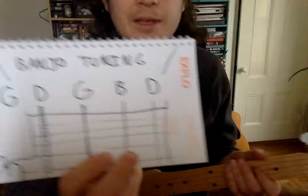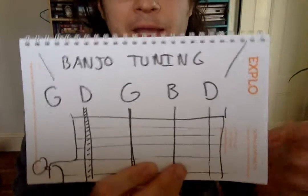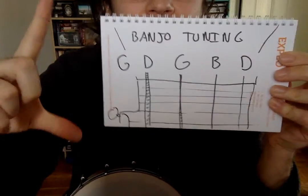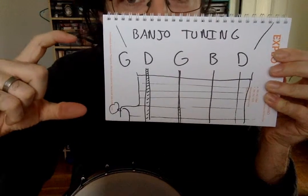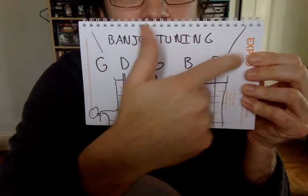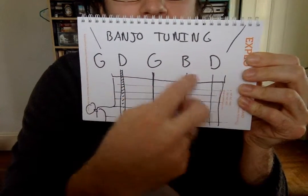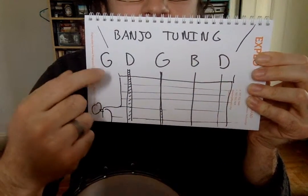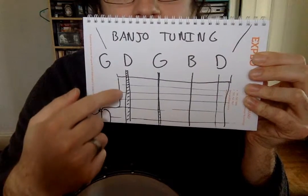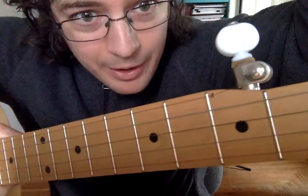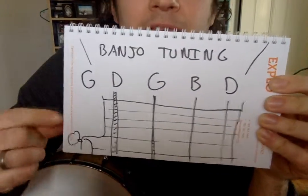So this is a diagram of banjo tuning. If you imagine this is a kind of very short banjo neck — this up here is the head, this is the nut, and then down here is the neck where it expands and adds string number five. You see how the neck actually gets a little wider there? So that there is string number five.